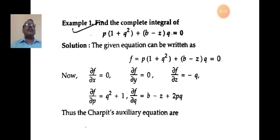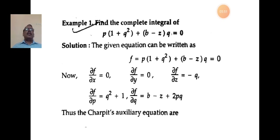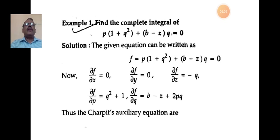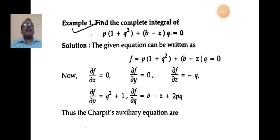Problem 1: Find the complete integral of p(1+q²)+(b−z)q=0. The given equation can be written as f = p(1+q²)+(b−z)q = 0. Differentiating: ∂f/∂x = 0, ∂f/∂y = 0 (since the equation does not contain x and y), ∂f/∂z = −q, ∂f/∂p = q²+1, and ∂f/∂q = b−z+2pq.